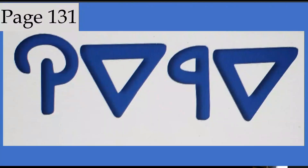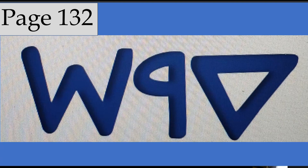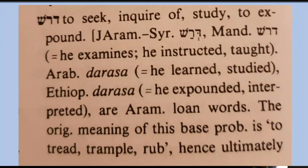On page 131, we have Dalit-Resh-Dalit-Kuf, defined as pupil, beginner, novice, child, small, minute, light — he pounded, broke into pieces. On page 132, we'll look for Dalit-Resh-Sheen, defined as to seek, inquire of, study, expound. He examines, instructed, taught, he learned, studied, he expounded, interpreted.